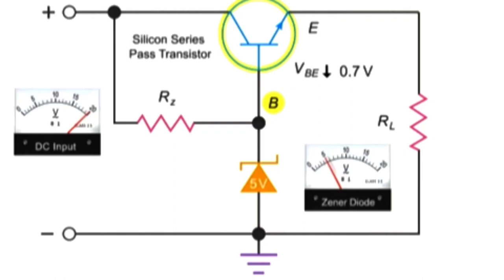The base of this transistor is connected directly to our 5 volt Zener diode. Keeping in mind the rule of 0.7, we can determine that the output voltage at the emitter will be 0.7 volts less than the voltage at the base, or 4.3 volts. Therefore, the voltage level at the RL load resistor will also be 4.3 volts.